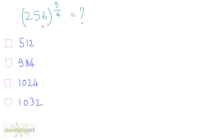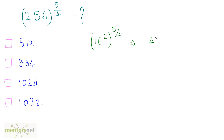256 is the square of 16, so you can write 256 raised to 5 by 4 as 16 squared, raised to 5 by 4. And 16 is the square of 4, so you can write this as 4 squared raised to 2, which is raised to 5 by 4.